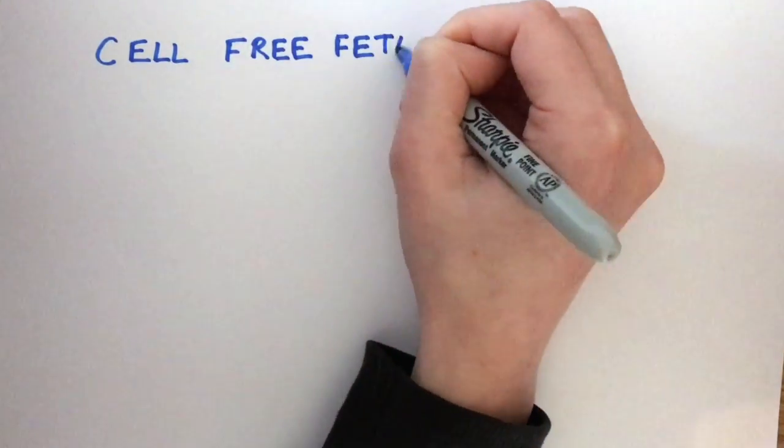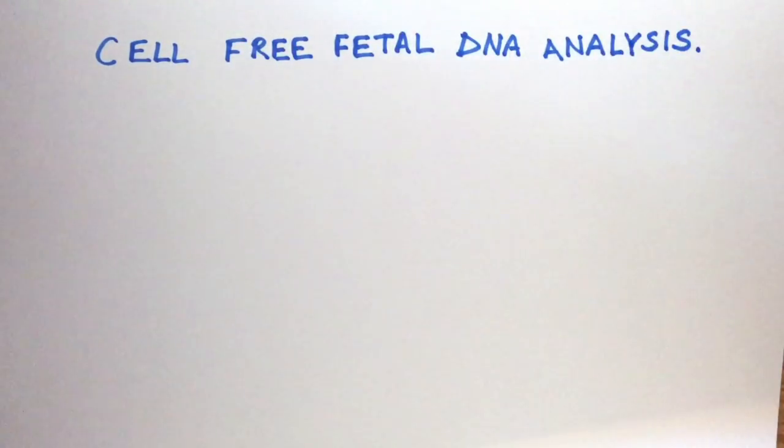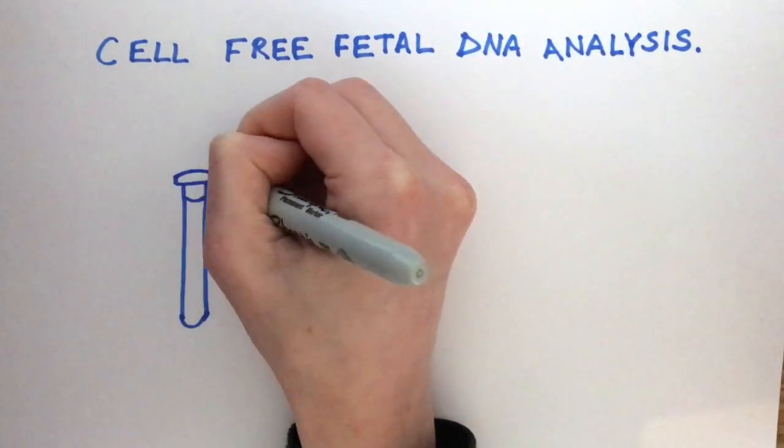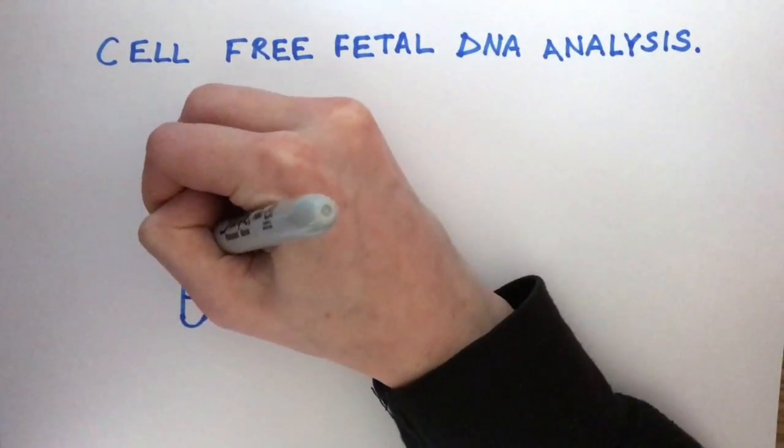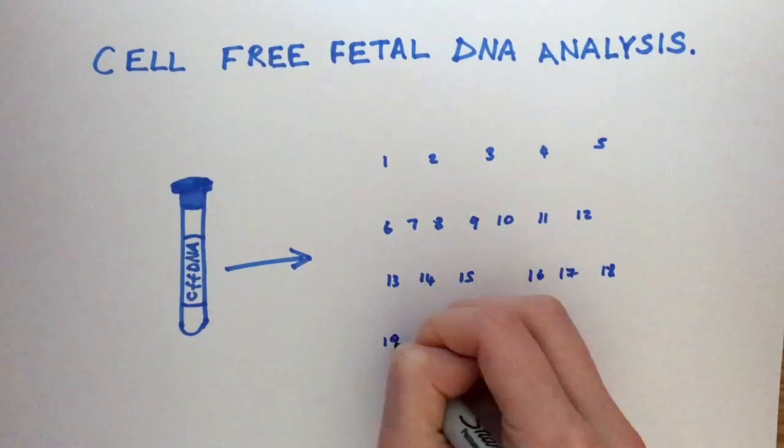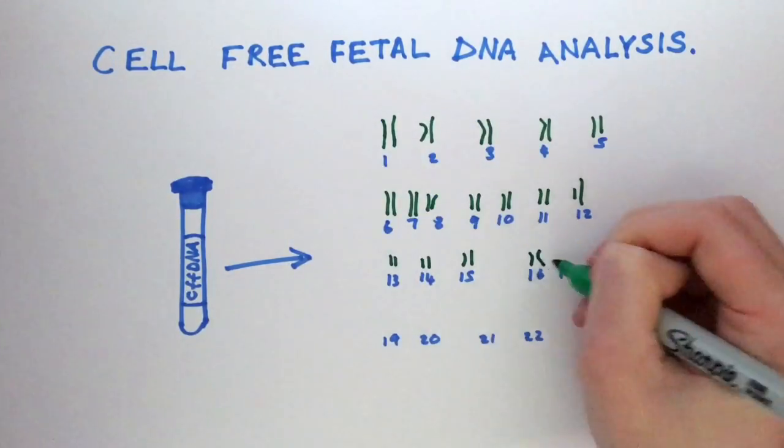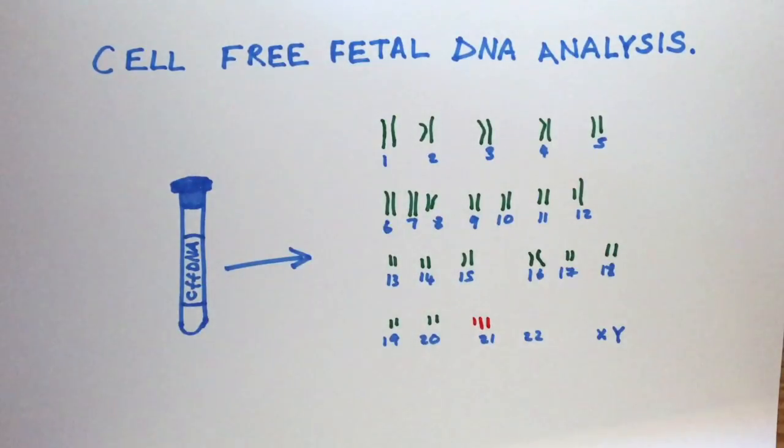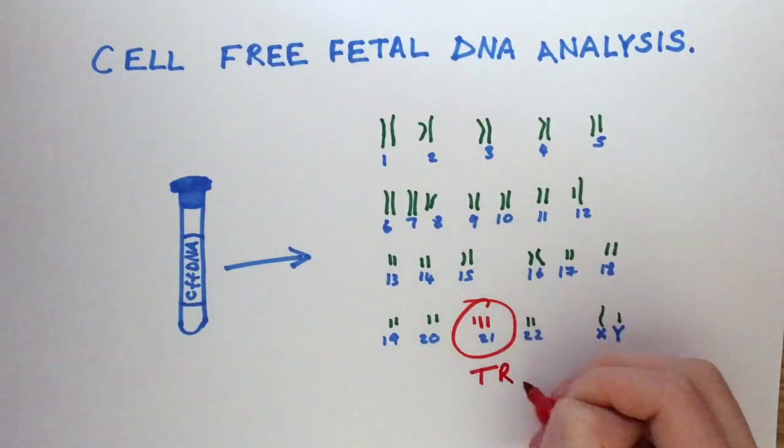Cell-free fetal DNA analysis. How does the science actually work? This video will explain how cell-free fetal DNA can be analyzed to check for aneuploidies, an example of which is trisomy 21, also known as Down syndrome.